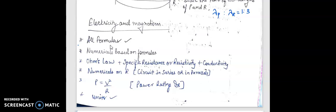Electricity and magnetism - all the formulas must be revised. If you have any formula notebook, you can revise it one day before your exams. Then numericals based on formulas are mainly asked, but you have to focus on the reasoning questions as well. Ohm's law is a very important concept here. Specific resistance or resistivity, conductivity - all these definitions and formulas.